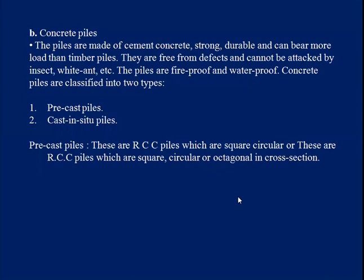Next is concrete piles. Concrete piles are made of concrete. They are strong, durable, and carry more load compared to timber piles. They are free from defects and cannot be attacked by insects or white ants. Concrete piles are fireproof and waterproof. Concrete piles are classified into two categories: precast piles and cast-in-situ piles.